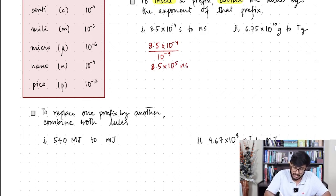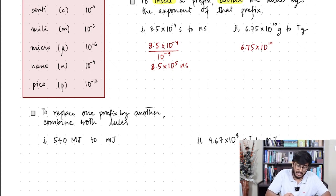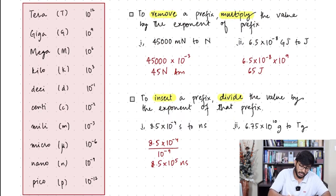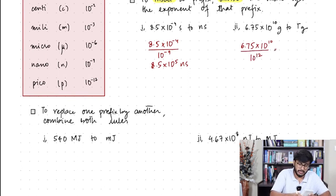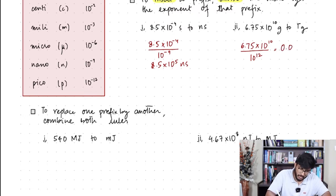Similarly, 6.75×10¹⁰ grams — I want to convert it into teragrams. Tera is 10¹², so I divide by 10¹²: 6.75×10¹⁰ divided by 10¹², which gives 0.0675 teragrams.